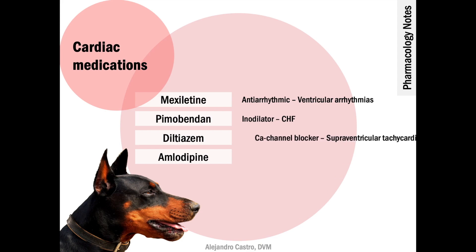Diltiazem is a calcium channel blocker that slows AV node conduction and is used to treat supraventricular tachycardias and, in some cases, hypertension and atrial fibrillation.